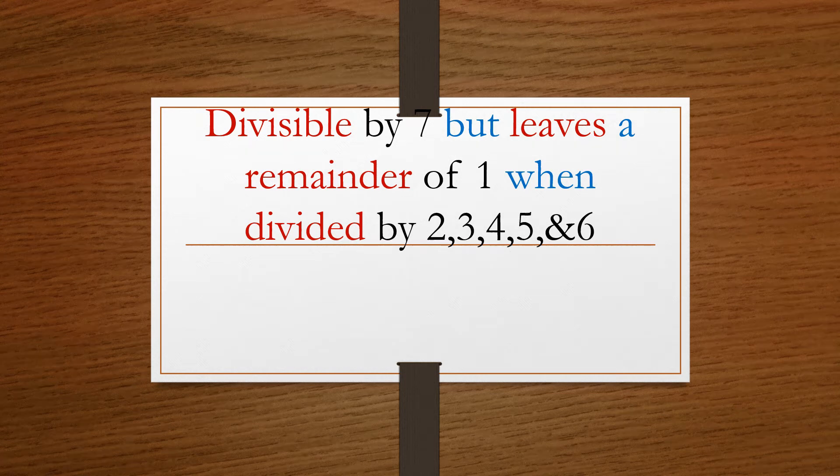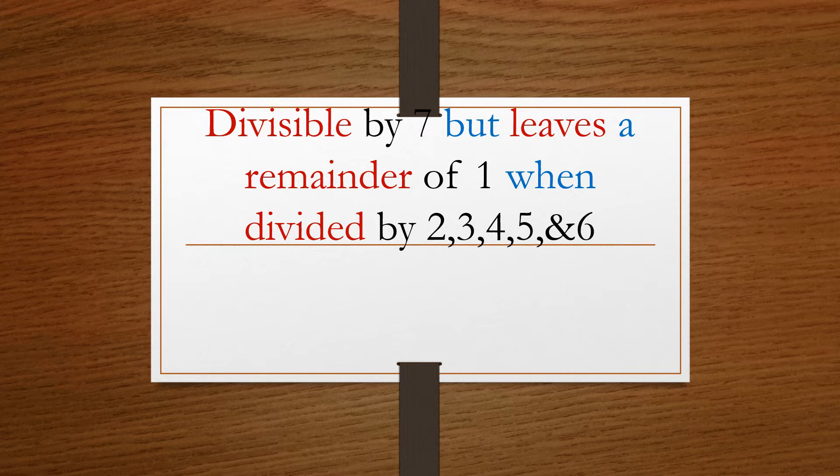Welcome back. In this video, we are going to determine the smallest number that is divisible by 7 but leaves a remainder of 1 when divided by 2, 3, 4, 5 or even 6.